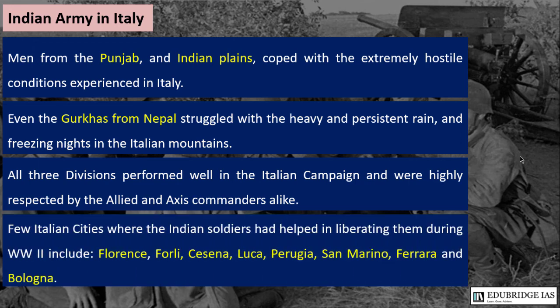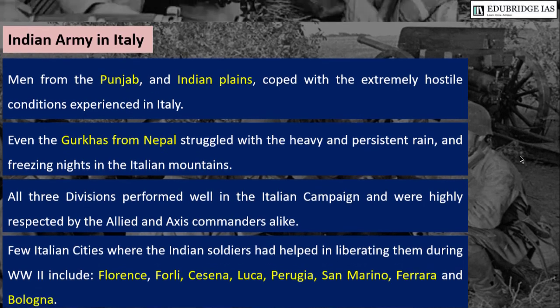A few Italian cities where Indian soldiers helped in liberating them during World War II include Florence, Foligno, Cesena, Lucca, Perugia, San Marino, Ferrara, and Bologna.